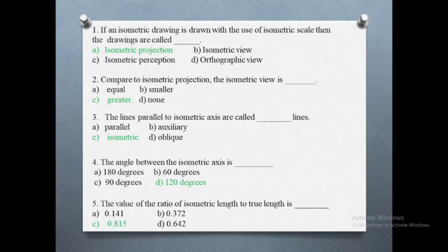The first question is: if an isometric drawing is drawn with the use of isometric scale, then the drawings are called. Options are: a) isometric projection, b) isometric view, c) isometric perception, d) orthographic view. The correct answer is isometric projection.